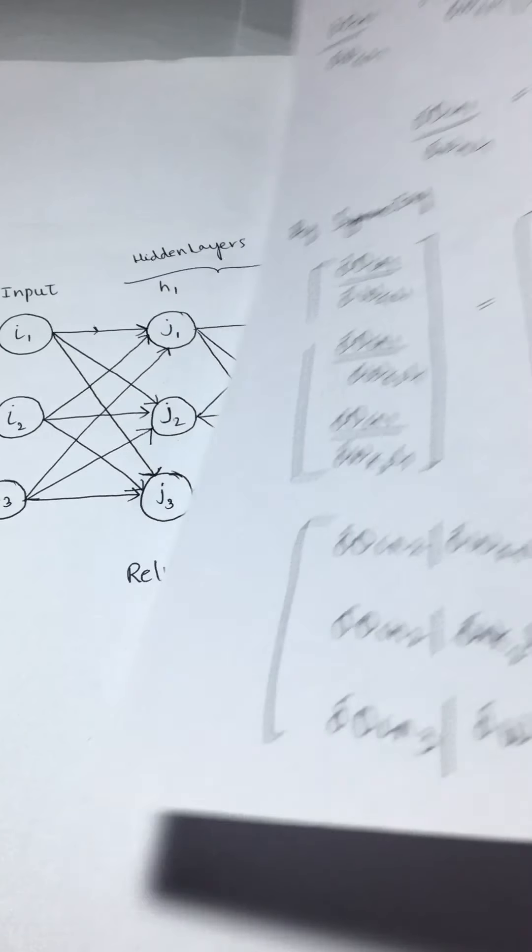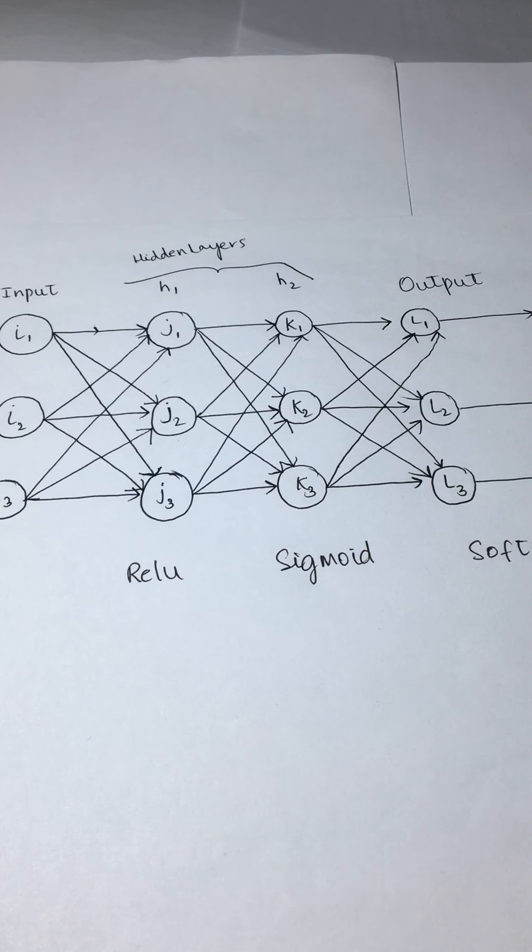Now we have calculated all three derivatives: the derivative of error with respect to your weights, derivative of input with respect to your output, derivative of output with respect to input, and your final derivative of input with respect to your weights.